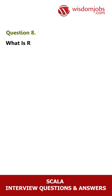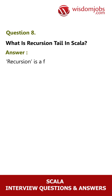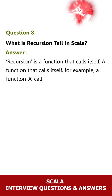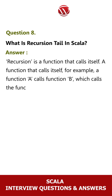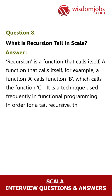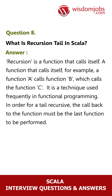Question 8: What is recursion tail in Scala? Answer: Recursion is a function that calls itself. For example, a function A calls function B, which calls function C. It is a technique used frequently in functional programming. In order for a tail recursive call, the callback to the function must be the last function to be performed.